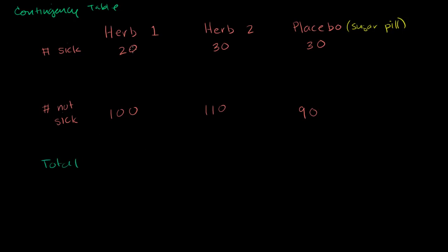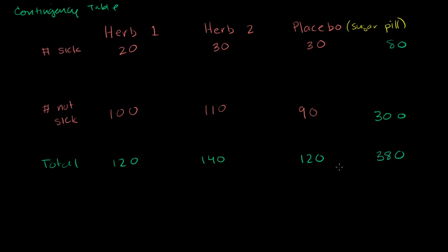In group one, we had a total of 120 people. In group two, we had a total of 30 plus 110, which is 140 people. And in the placebo group, the group that just got the sugar pill, we had a total of 120 people. We can also tabulate the total number of people that got sick: 20 plus 30 is 50, plus 30 is 80. The total people that didn't get sick is 100 plus 110 is 210, plus 90 is 300. And the grand total is 380 — both the column and row totals should add up to 380.